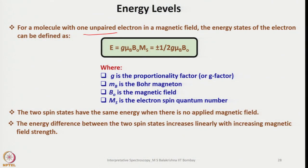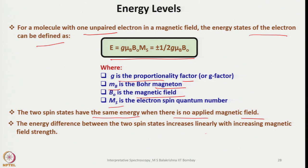Let us look into the energy levels associated with the two electron spins. For a molecule with one unpaired electron in a magnetic field, the energy states are defined as E = G·μ_B·B₀·M_s, which equals ±½·G·μ_B·B₀, where G is the proportionality G-factor, μ_B is the Bohr magneton, B is the applied magnetic field, and M_s is the electron spin quantum number. The two spin states have the same energy when there is no applied magnetic field. The energy difference between the two spin states increases linearly with increasing magnetic field strength.